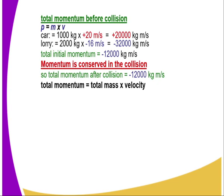Total momentum is equal to total mass times the velocity. And since the bodies move together, we have the sum of the mass which is therefore 3,000 kg multiplied by the common velocity.